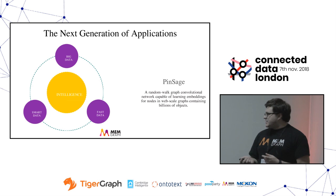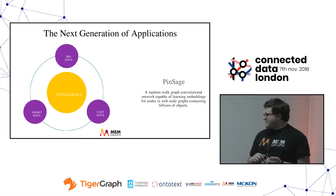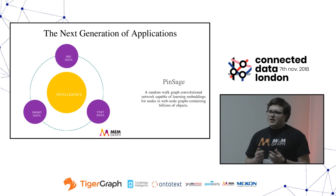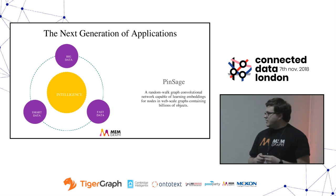One interesting thing for me personally: I know the chief scientist at FinSage, who does their graph work, and I've been following their research. Their Random Walk Graph Convolutional Network is really state-of-the-art research on what you can do with graphs and how you can leverage graphs to amplify machine learning. That's where we are currently heading.